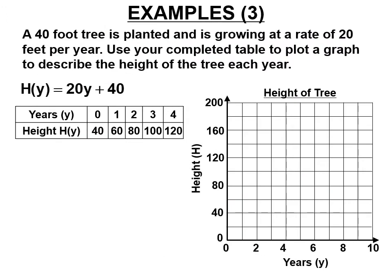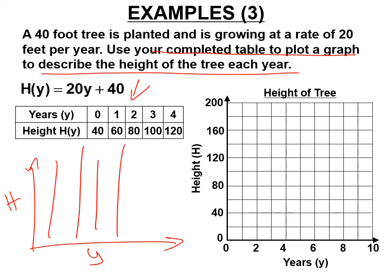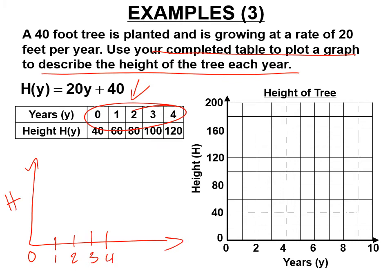Now we'll use our completed table to plot a graph. Put years on the bottom axis and height on the side, with arrows. The y-axis goes 20, 40, 60, 80, 100, 120. The y-intercept is at 0, 40. In one year it's 60, two years it's 80, three years it's 100, four years it's 120.